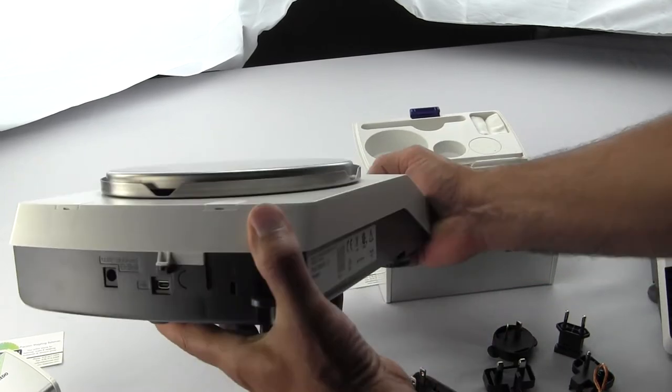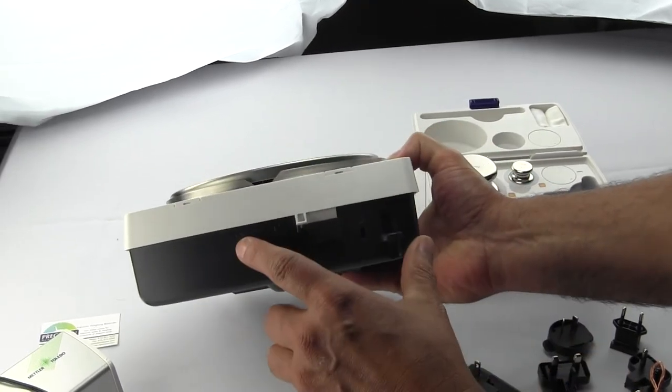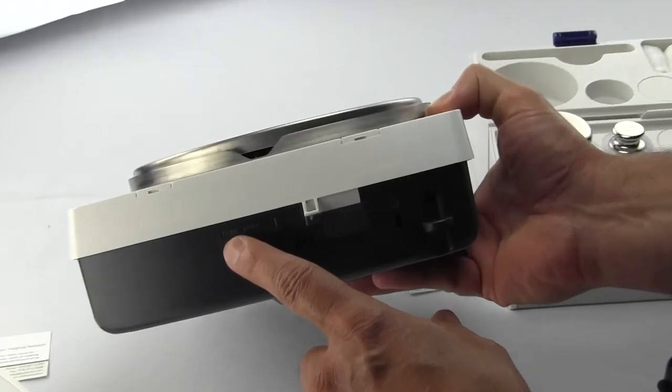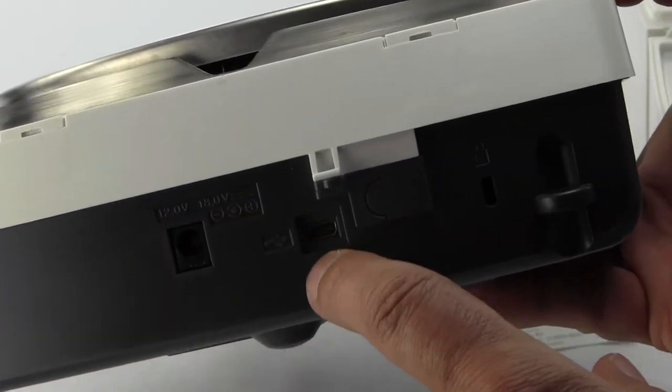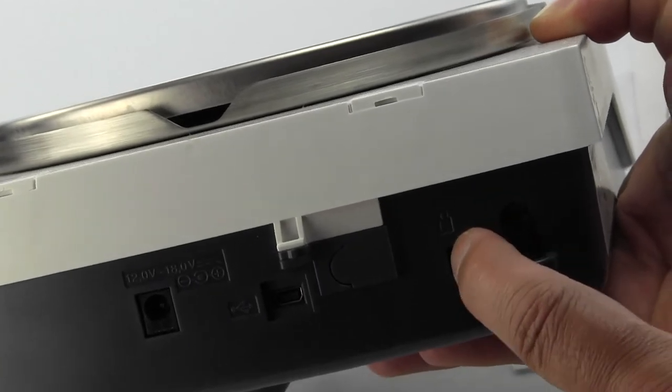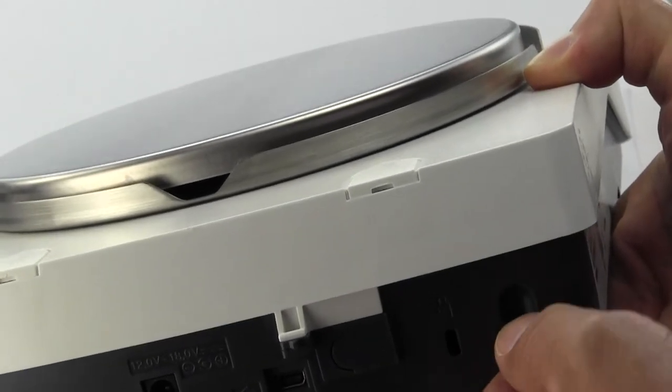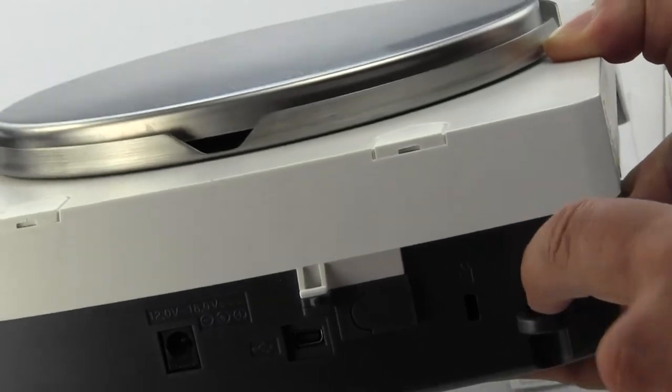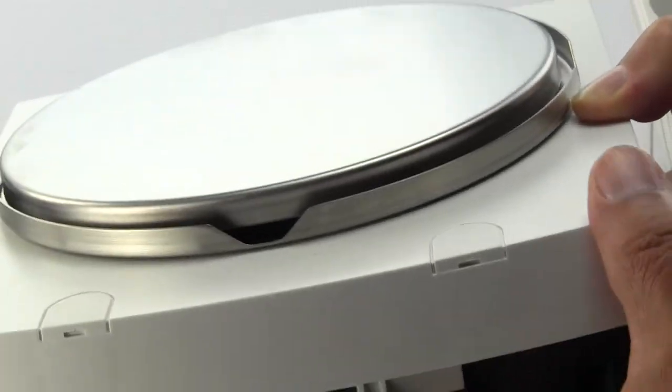On the rear of the balance, this is for your AC power supply, this is your USB interface. This is for a Kensington lock, or you can put a cable right through the back to lock it to a bench.